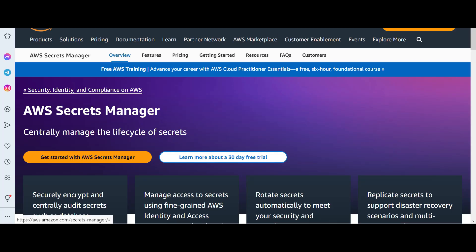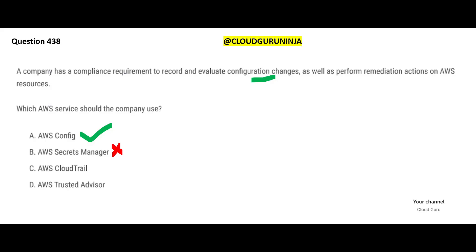Secrets Manager manages the lifecycle of secrets — your passwords, AWS keys, encryption keys. It is a security solution, not a configuration solution. CloudTrail is a monitoring solution — who initiated EC2 instances, who terminated them, who fired what query — it's a monitoring solution, not configuration. Trusted Advisor is an advising solution — it will tell you how to save cost, just like your father always tells you the best way to save and invest money.